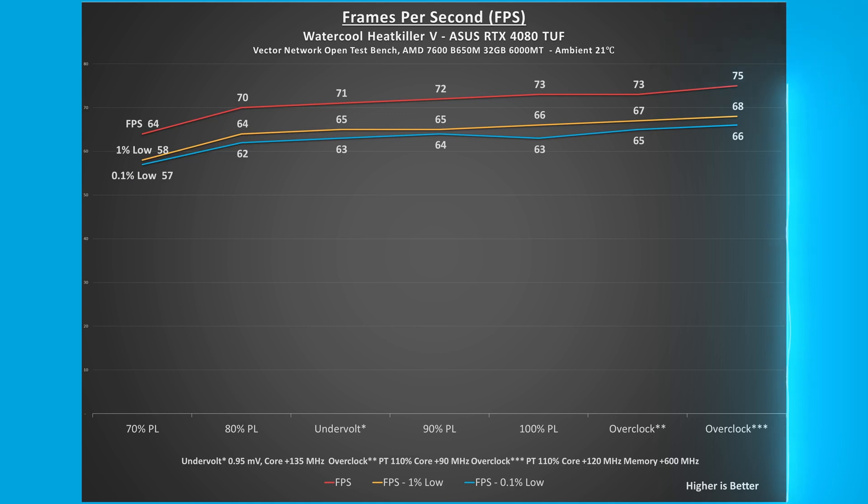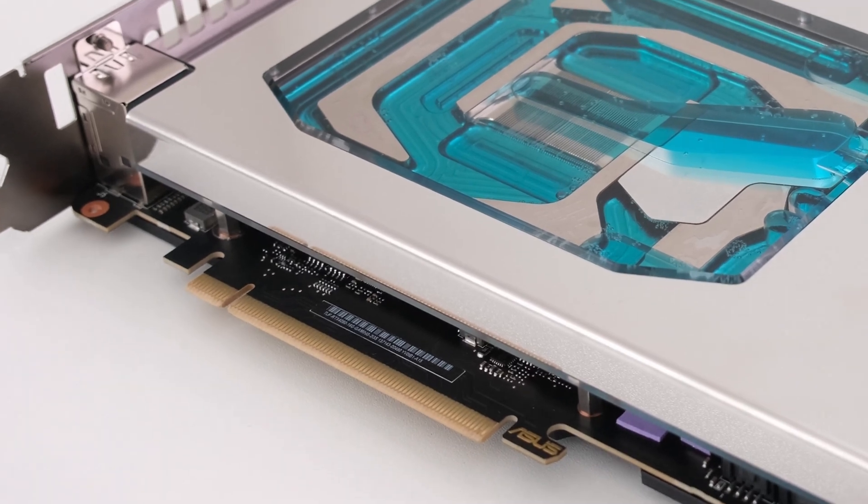Frames per second was recorded during 3DMark Speedway stress test. At stock, the FPS was 73 and at 80% power limit the FPS was 70, a 3 FPS or 4% reduction.